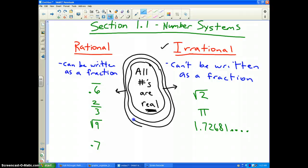Now, real numbers can be divided into two groups, as I've written in red on the smart board. Real numbers can either be rational or they can be irrational. The difference is rational numbers, as I've written in blue, can be written as a fraction.